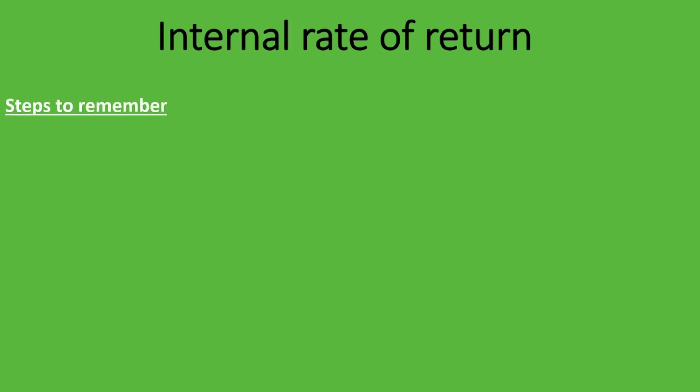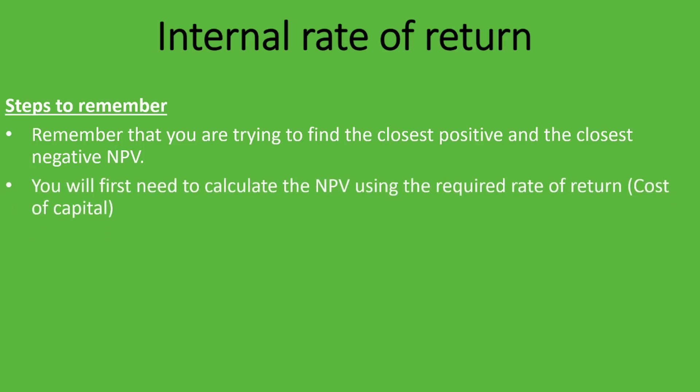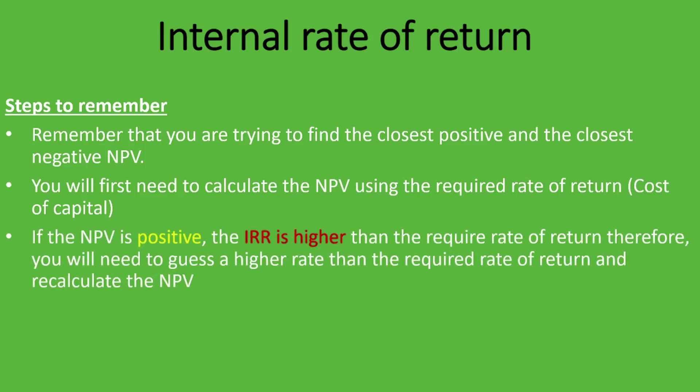Here are the steps to remember when calculating the IRR using the trial and error method. The first thing is that you are trying to find the closest positive and the closest negative NPV to zero. You will first need to calculate the NPV using the required rate of return or cost of capital you are given. If the NPV is positive, the IRR is higher than the required rate of return, so you need to guess a higher rate and recalculate.